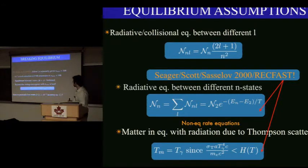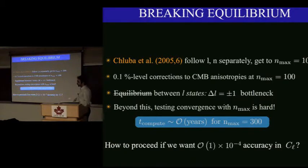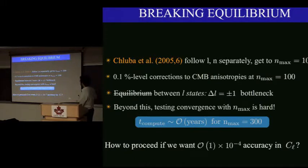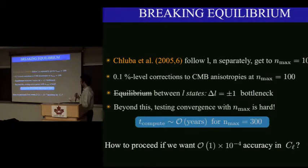The question is what happens when we start to follow different angular momentum substates separately. Jens was the first person to do this calculation in the cosmological context. In this calculation they followed different L and N substates separately and were able to get to around n=120. At Nmax of 100, there was still a 0.1% correction in the 2005 paper. This was our motivation to attack this problem and find out how high in N we need to go for the recombination history to converge accurately enough for Planck data analysis.